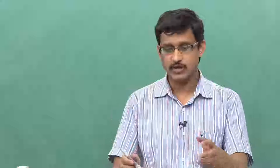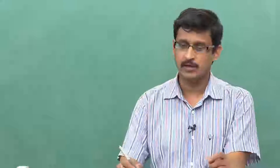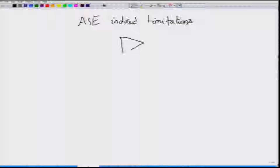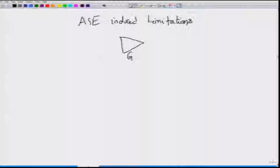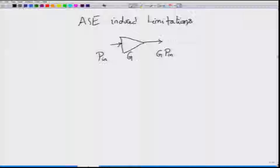We recall from earlier modules that an optical amplifier — whether a semiconductor optical amplifier or an erbium doped fiber amplifier — is characterized by two things. One is the gain of the amplifier: if at the input terminals we have an input optical power P_in, at the output we get a power which is G times P_in.